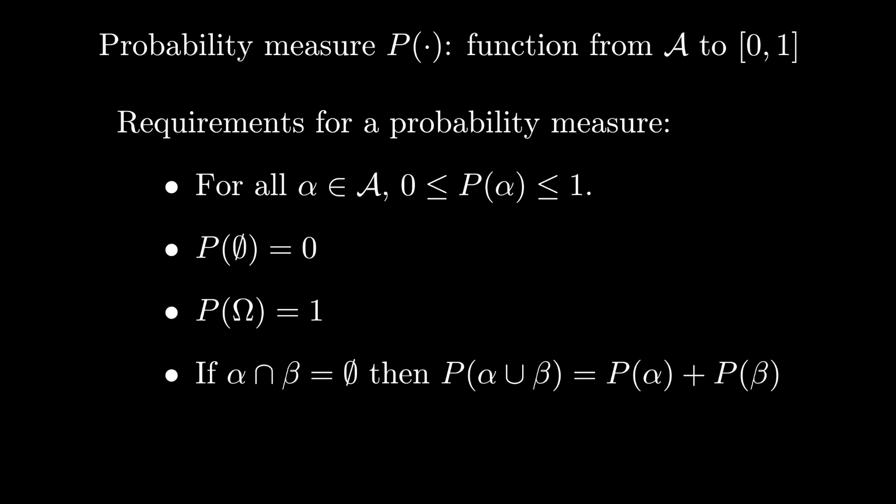Now every event space contains the empty set and all of omega, and those need to have measures 0 and 1 respectively. The other property that we need is that if we have two disjoint sets, that is two sets whose intersection is the empty set, then the probability measure of their union must be equal to the sum of the two probability measures taken separately. Note that their union is guaranteed to be in the event space due to the closure properties that we require.